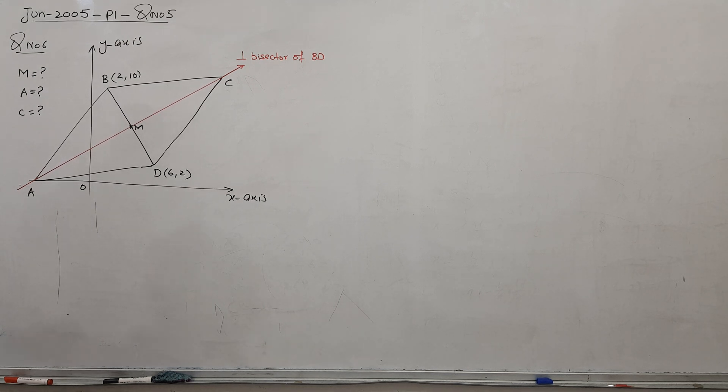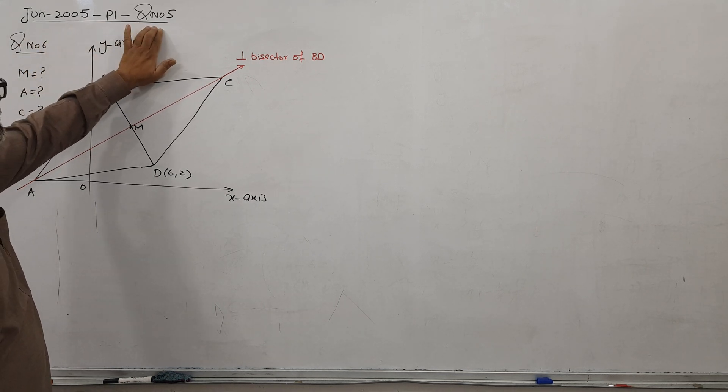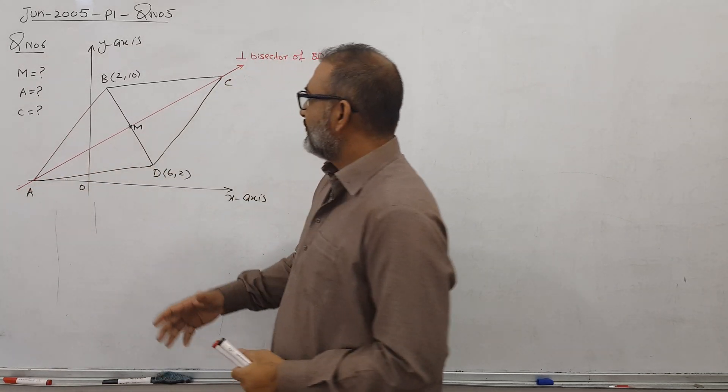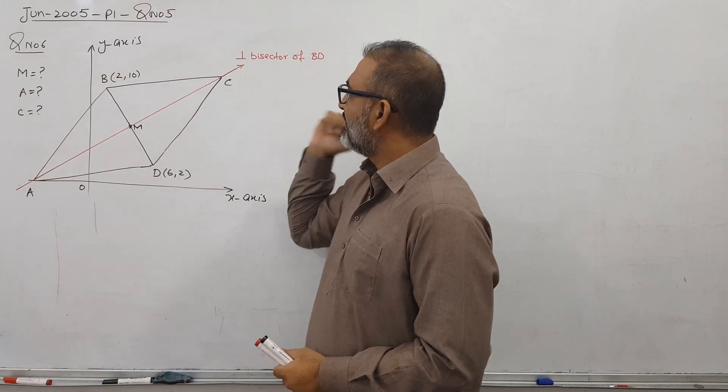Assalamu alaikum wa rahmatullah. This is June 2005, paper 1, question number 5. Topic is coordinate geometry of A-S. And we have this rhombus diagram given here.